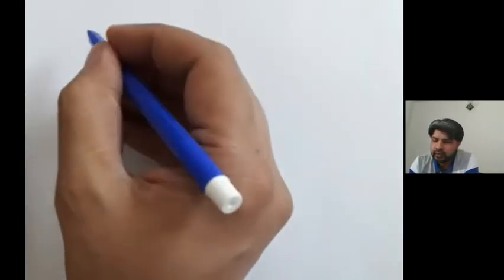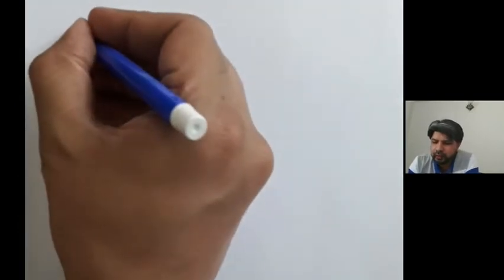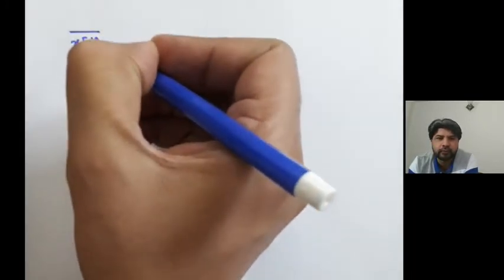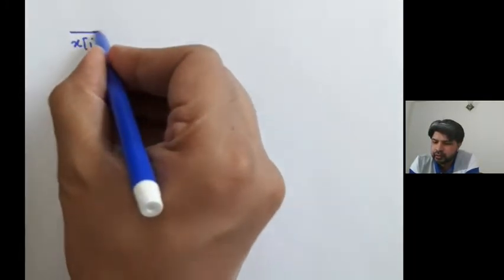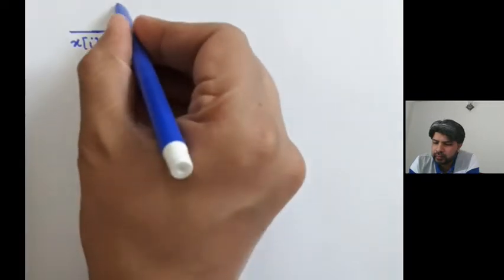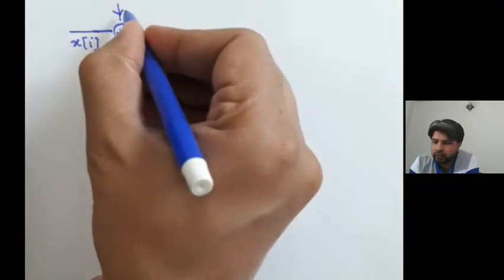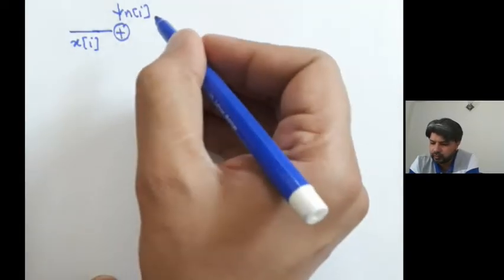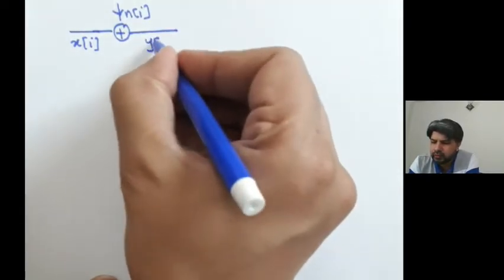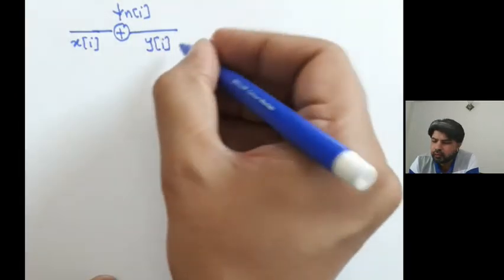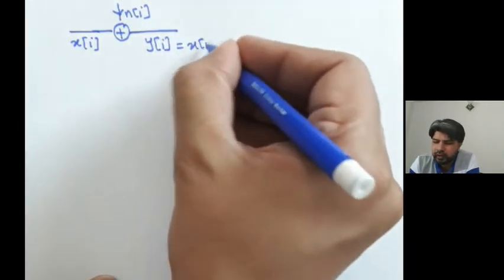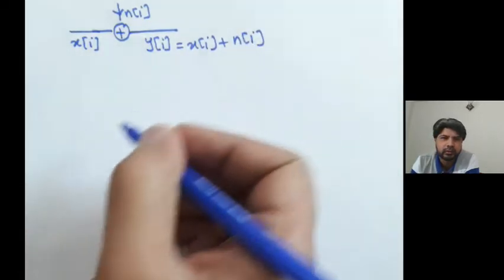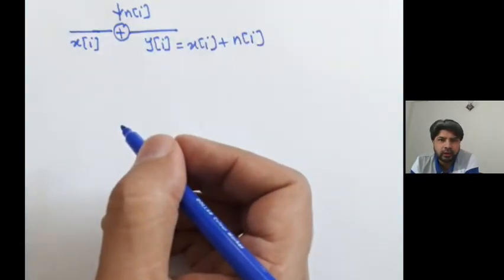So what we said was that suppose we have a discrete time channel, and suppose if x of i is the input of the channel, and white Gaussian noise n of i gets added on top of it. Then your received signal y of i would be x of i plus this white Gaussian noise. And this channel is called a Gaussian channel.